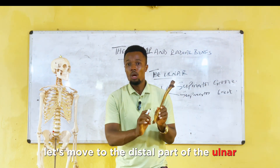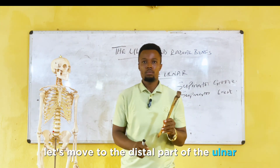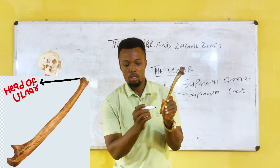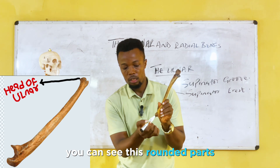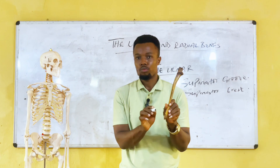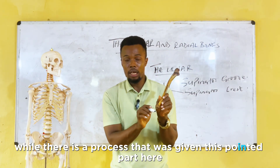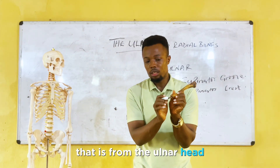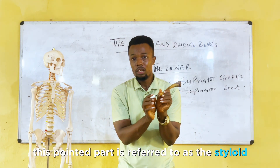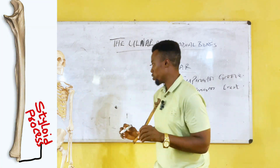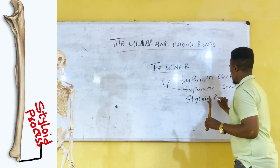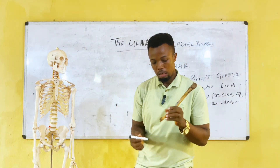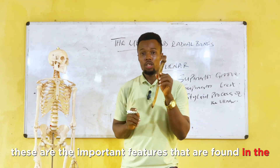Moving to the distal part of the ulna, this rounded part is the head of the ulna. There is also a pointed part extending from the ulna head, which is referred to as the styloid process of the ulna.